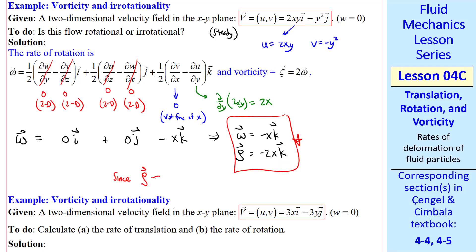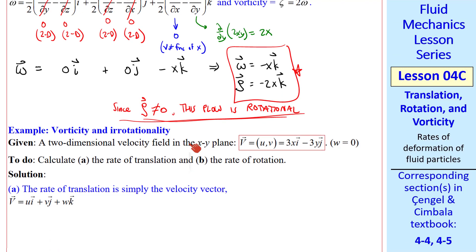In conclusion, since zeta is not zero, this flow is rotational, with the vorticity vector parallel to the Z direction. Let's do another example.